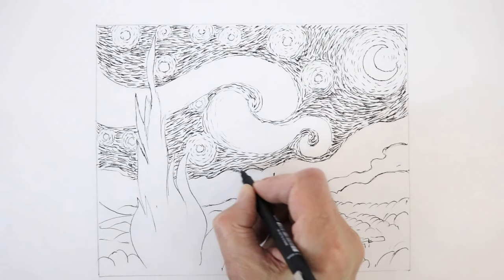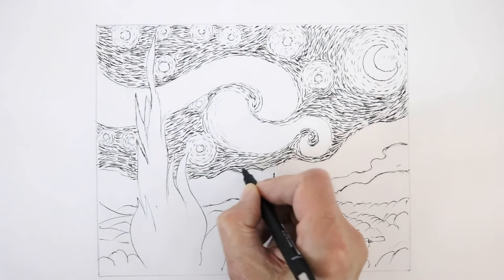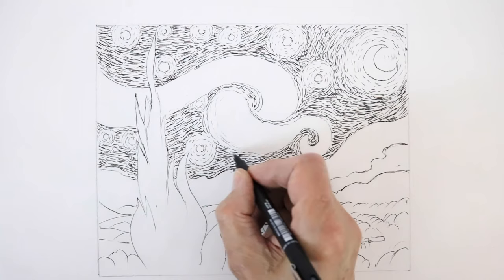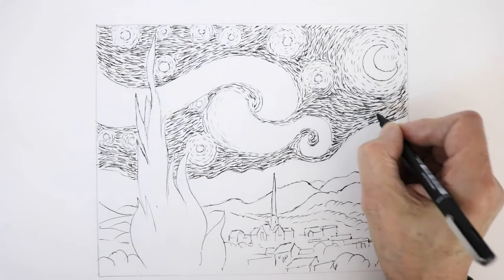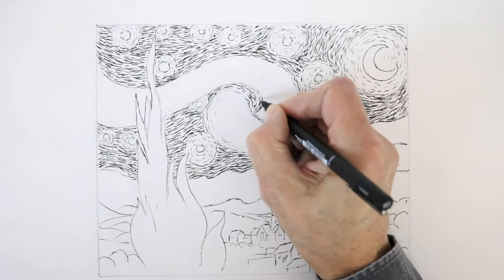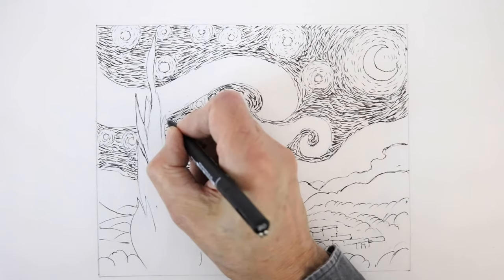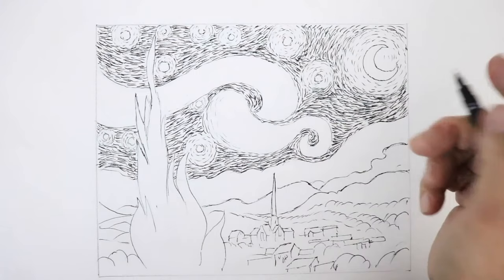As you can see, I've carried on working in those lines all over the sky, just patiently darkening down the whole areas so that the stars stand out against it. You can keep on doing that as much as you like. You can imagine all those hundreds and hundreds of brush strokes that Van Gogh used. I'll do a bit more on that later on.